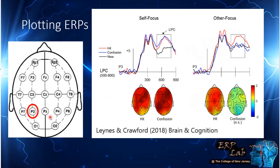When plotting ERPs, we record from many electrodes and papers will often only show one or selected electrodes. For example, here this is the P3 electrode, so you can see the activity at the P3 electrode — time on the x-axis and voltage on the y-axis. Prototypically, memory researchers plot positive up, but you have to look at the axis because some people plot negative up.